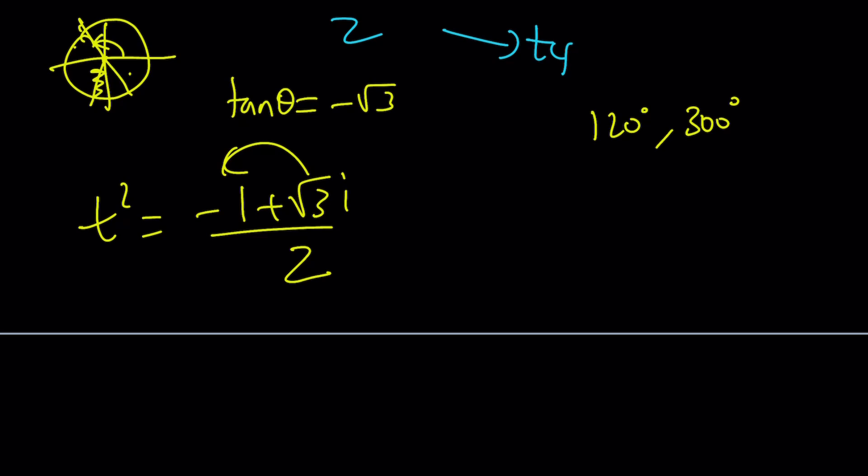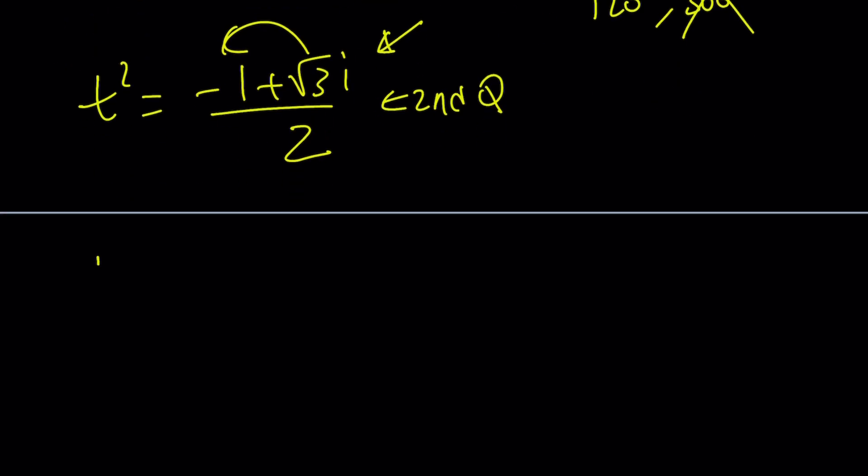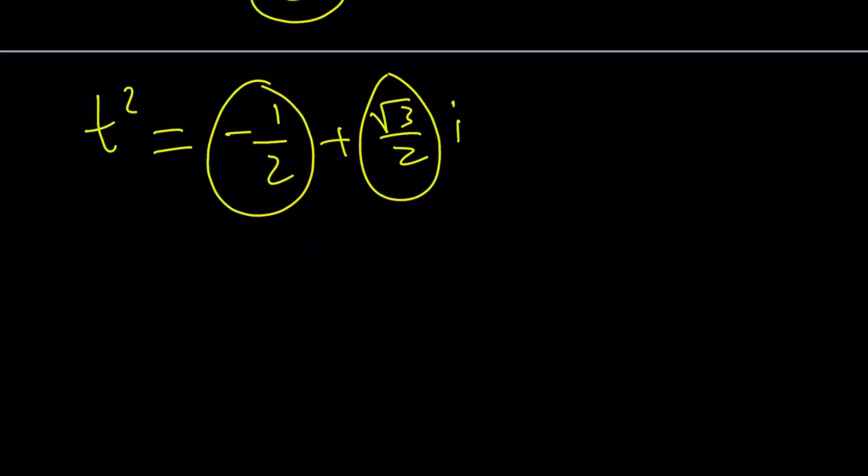But notice that the t squared value is kind of like a negative comma positive, right? So, that kind of tells you that this number is actually in the second quadrant. Make sense? Second quadrant because of the x and y values. So, we're just going to go with 120. So, t squared is, by the way, its modulus is 1. So, we don't have to worry about it. It's all good because I could write it as negative 1 half plus root 3 over 2i. So, this is going to be our cosine theta. This is going to be our sine theta. And that theta is 120 degrees. But, you can write it in radians too if you want.